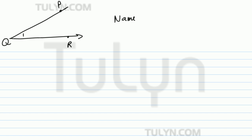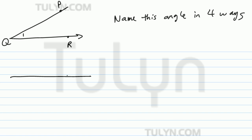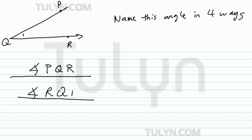The goal is to name this angle in four ways. You can name it angle P, then the vertex in the middle, Q, R — so angle PQR. You can also name it RQP.